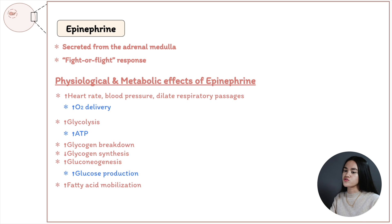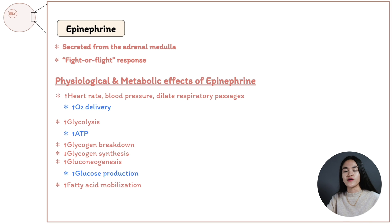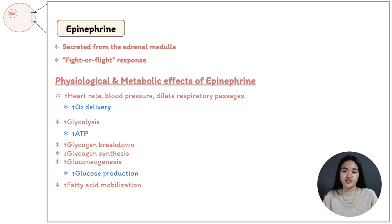Epinephrine also increases glucagon secretion and decreases insulin release. To summarize: epinephrine activates all pathways that produce glucose and ATP, because we have increased workload in a fight-or-flight situation, and it decreases all pathways and processes involved in storage.